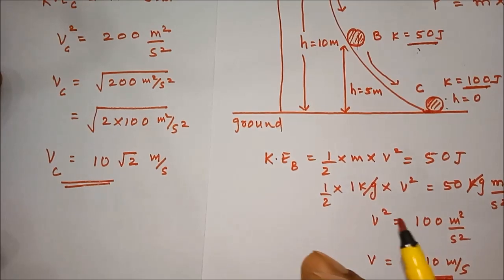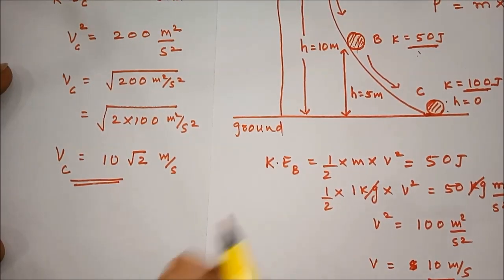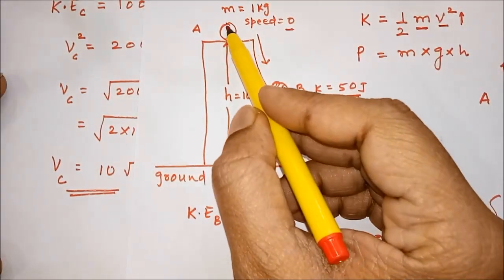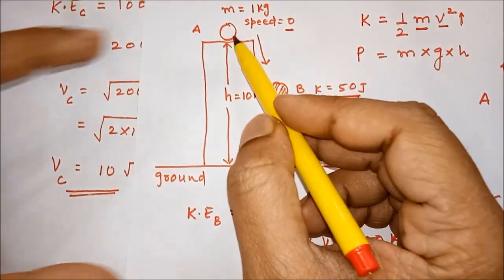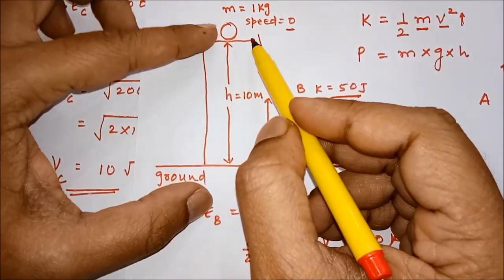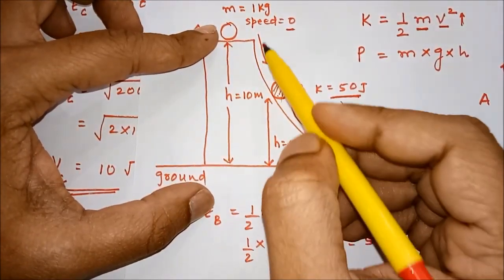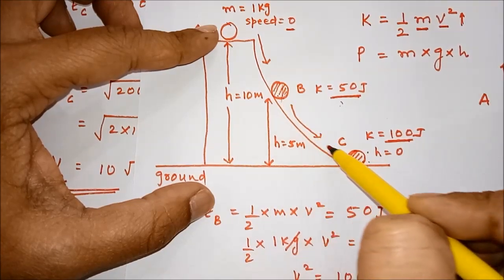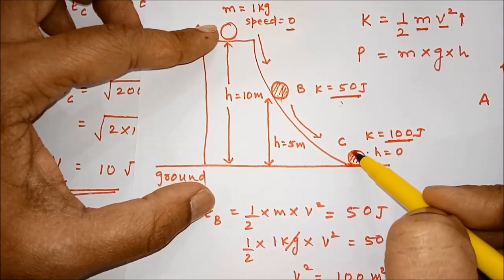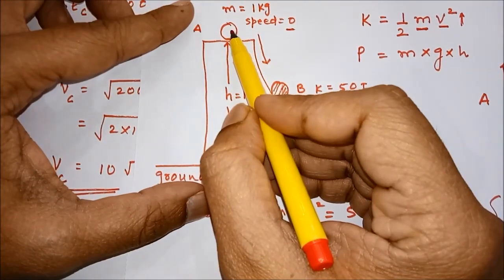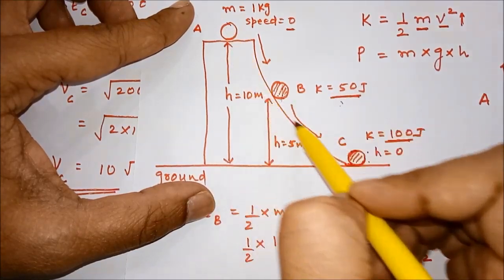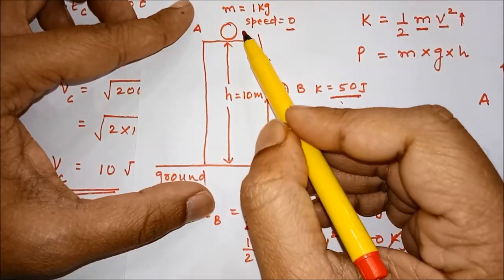When kinetic energy gets doubled, the speed increases by root 2 times. We can also state that as the ball goes down, the potential energy decreases and kinetic energy increases. As the ball keeps going down, its speed keeps increasing and is maximum at the lowest point. Highest kinetic energy is at the bottom, highest potential energy is at the top, but everywhere the sum E is going to be the same.